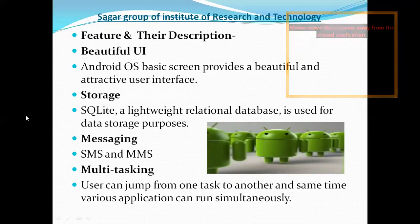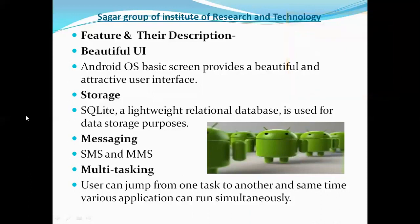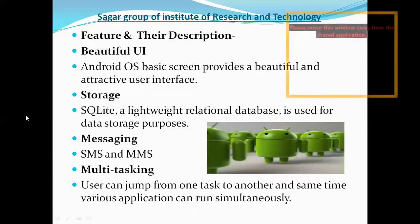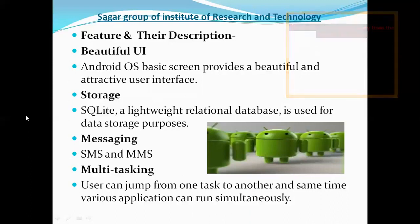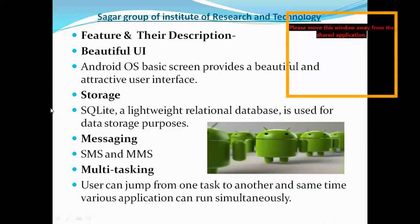First is called the Beautiful UI. UI means the user interface — the interface through which the user interacts. For example, your mobile screen: the wallpaper set is a user interface. When you are touching the mobile, what do you see first? You will see first of all the wallpaper of the mobile. This is called the user interface of your mobile.